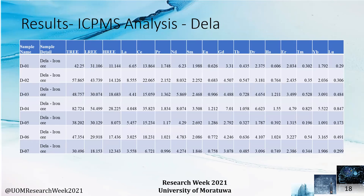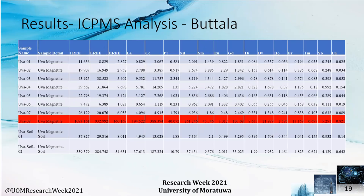This is the ICP-MS analysis for the Dara deposit. As you can see, there is no high variation in the total rare earth element concentration, because all samples were collected from the iron ore itself and the weathered material was not available at the sampling site. In the Buttala deposit, the highest concentration was shown for the UA8 sample, which was also collected from the heavily weathered and transported portion of the deposit, similar to the Paniranga deposit.